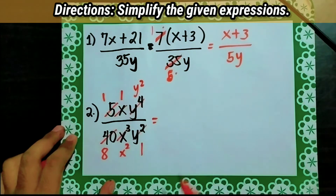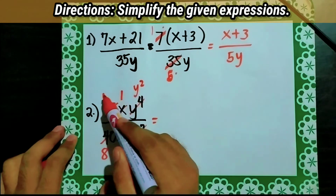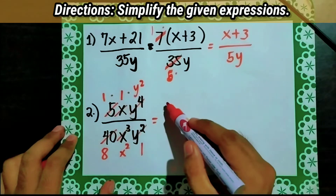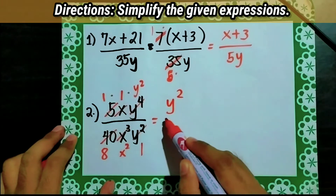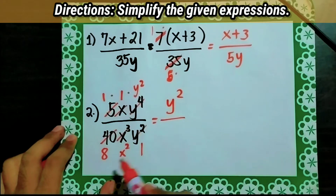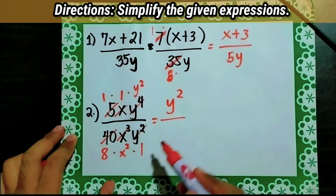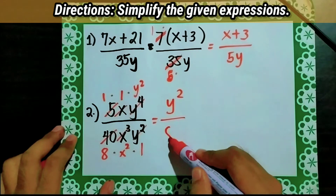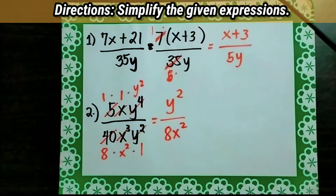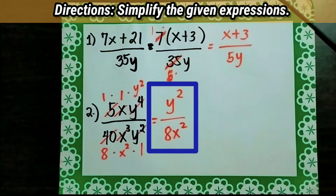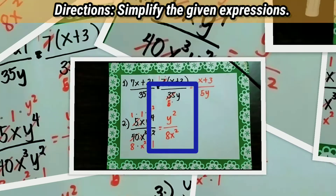Now let's multiply: 1 times 1 times y squared equals y squared, over 8 times x squared times 1, which equals 8x squared. So our answer is y squared over 8x squared.